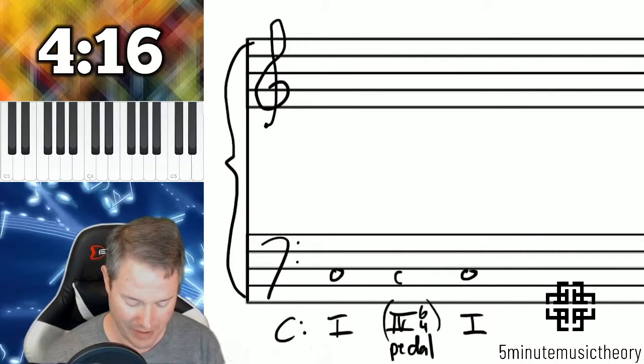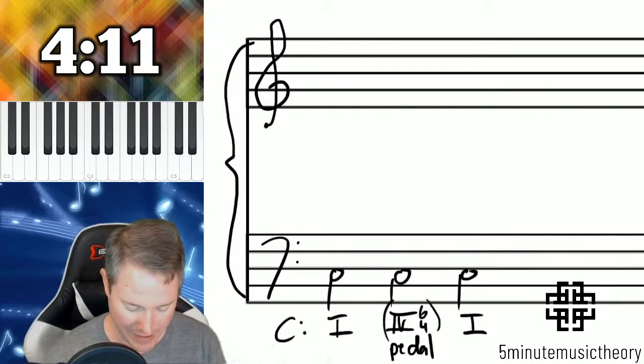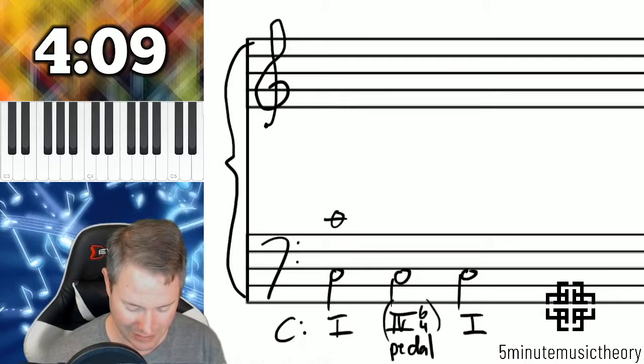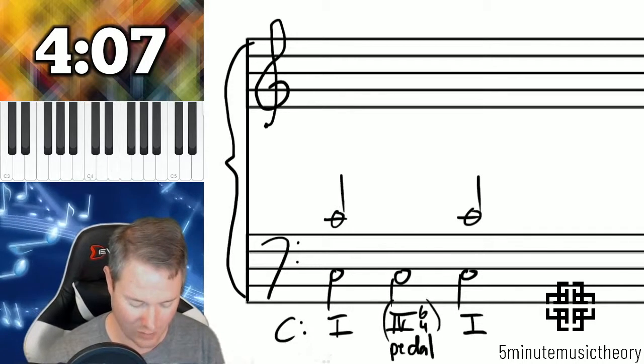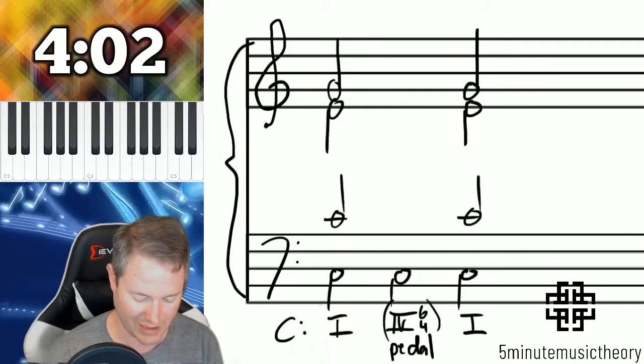And here we go. All of these are going to have a bass note of C. That's what makes this a pedal 6-4. And then I'm going to voice the two tonics this way, like that, E-G, E-G. We'll use the same voicing.